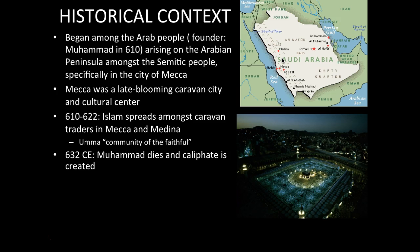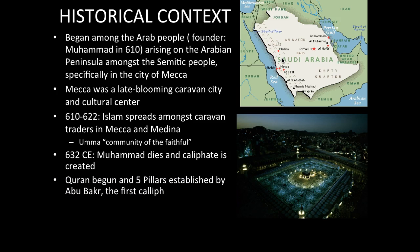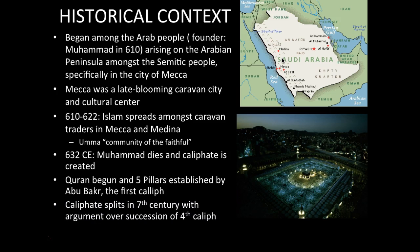Muhammad's death marked the beginning of the caliphate. The official book of Islam is the Quran, which established the Five Pillars of Islam and the first caliph, Abu Bakr, marking the beginning of the first caliphate. The caliphate split in the seventh century over a dispute about the succession of the fourth caliph. The Five Pillars are: the Shahada — the profession that there is only one God, Allah, and Muhammad is his prophet — and Salat, the daily regiment of prayer toward Mecca multiple times a day.